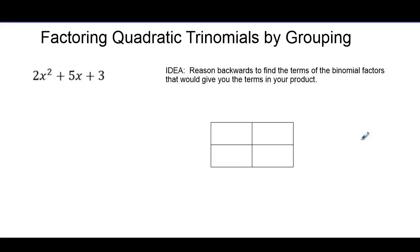So now we're going to reason backwards using the area model to try to find the binomial factors for this trinomial. So we'll need a 2 by 2 box. And think back, when we multiplied the binomial factors, we ended up with our squared term in this box and the constant term here. And now we're going to reason backwards to figure out what the dimensions would have to be. Those will be the terms of our factors.